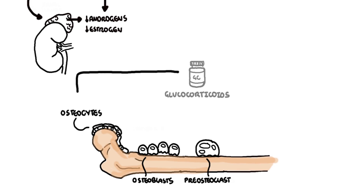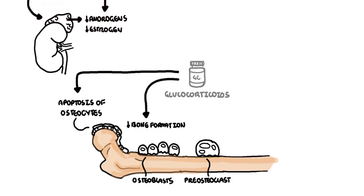Glucocorticoids stimulate osteocyte apoptosis. With long-term use, the predominant effect of glucocorticoids on the skeleton is actually a reduction in bone formation. The decline in bone formation is mediated by direct inhibition of osteoblast proliferation and differentiation, and by an increase in the apoptotic rate of mature osteoblasts and osteocytes. High glucocorticoid levels also stimulate RANK-ligand synthesis by pre-osteoblasts, supporting osteoclast differentiation and net bone resorption.